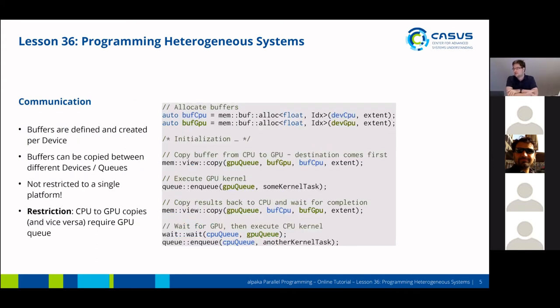Now how do we communicate between different backends? Buffers are defined and created per device. So if you look on the right-hand side, on the top, we are creating a buffer on the CPU using the alloc command, and we're also creating a buffer on the GPU. And those are tied to the devices we just created on the last slide.